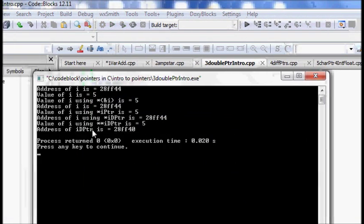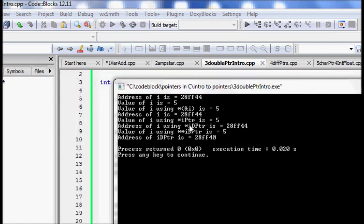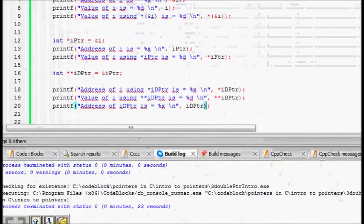So if you do it, so idptr is 28ff40. So that is there. So you see iptr is at 28ff44 and idptr is at 28ff40. So this is about double pointer. Basically we want to store the memory location where a pointer is stored. So I hope you understand this. Thanks a lot.